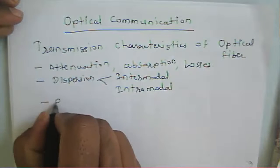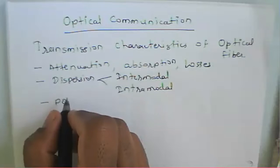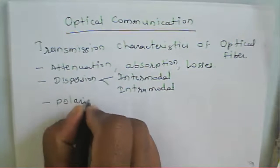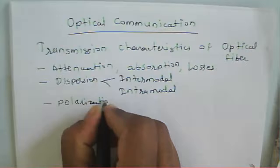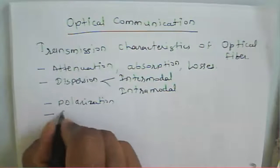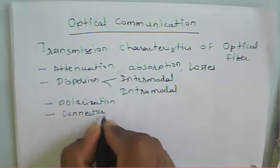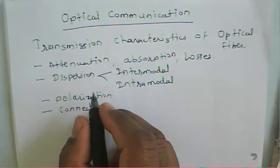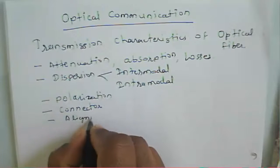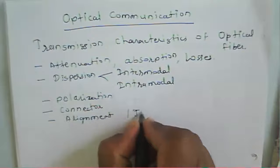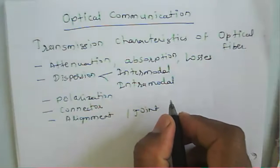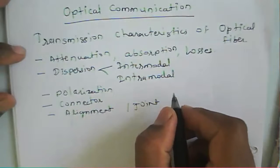After that, we will learn about the phenomena related to dispersion — what polarization is — and then we will learn about connectors: how fibers are connected. We will also learn about fiber alignment, which we can call joint losses — fiber alignment or joint losses in this particular topic.